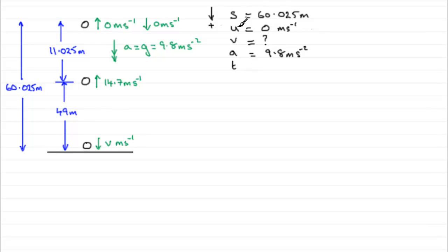So we've got S, U, V and A, so what equation would we want to use? Well, it has to be V squared equals U squared plus 2AS.